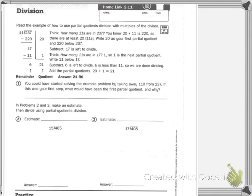We subtract and we have 17 left over. How many 11s are in 17? 1. So, that's the next partial quotient. You write the 11 below the 17 and subtract. 6 is left to divide. 6 is less than 11, so we are done dividing.